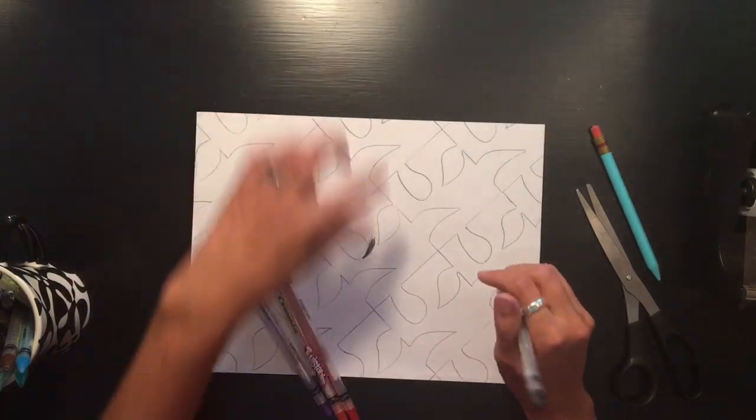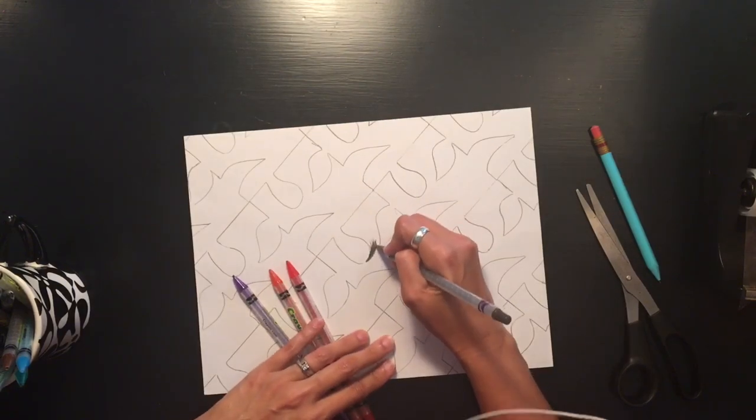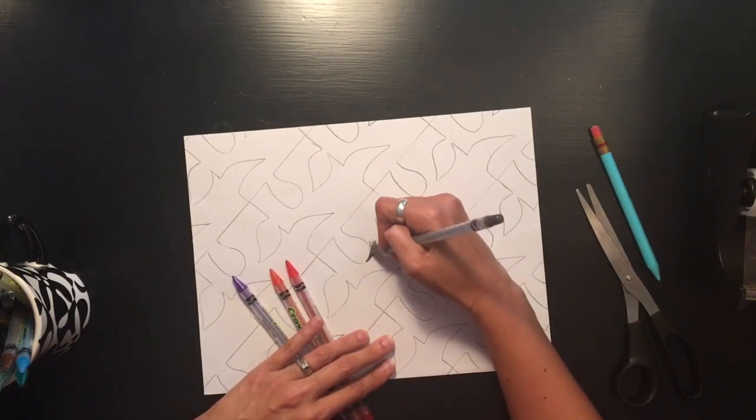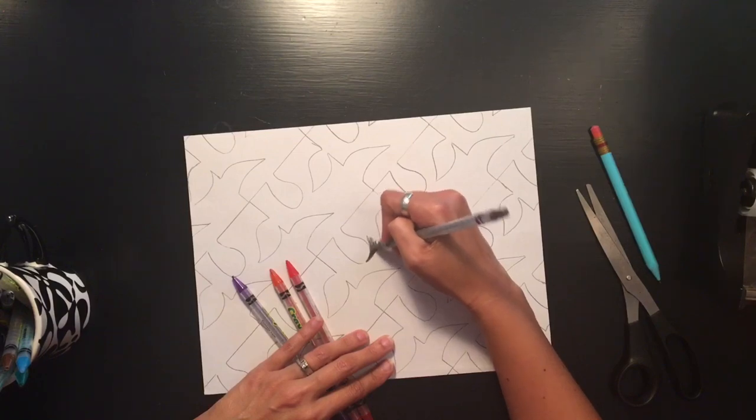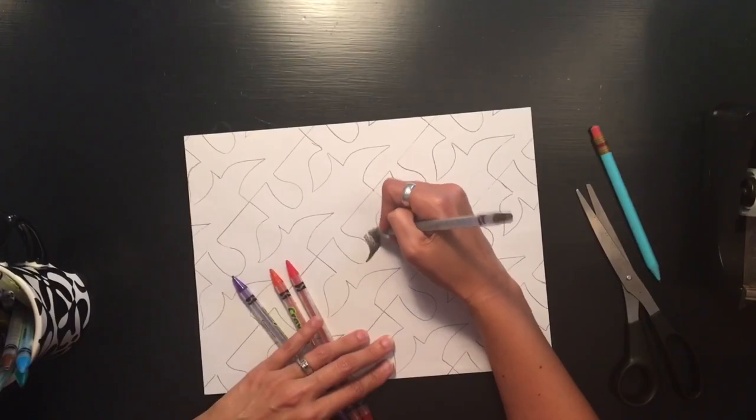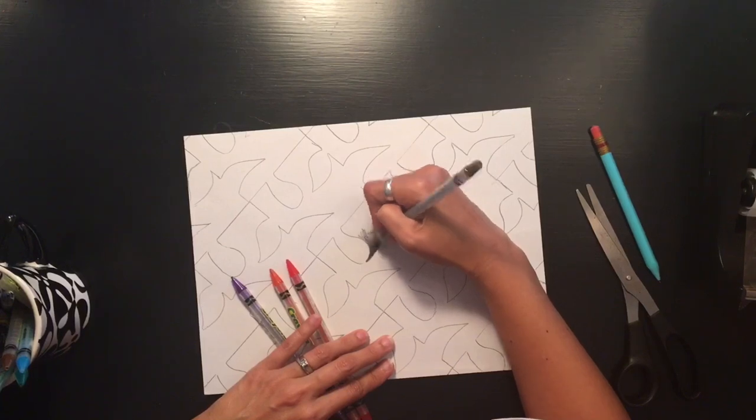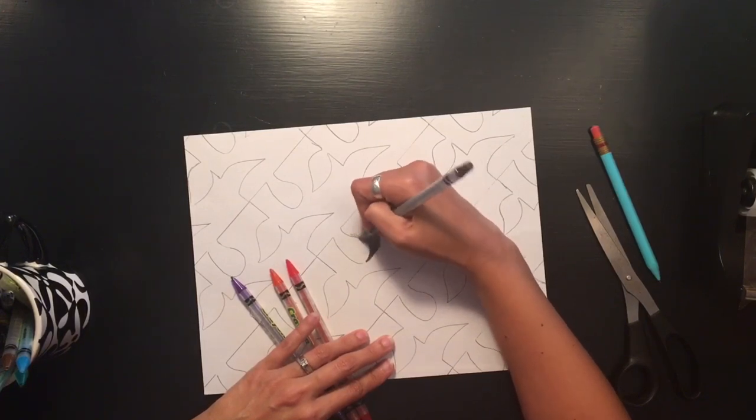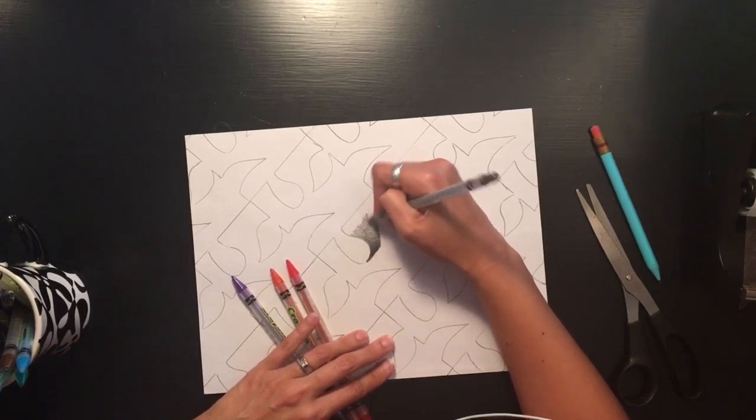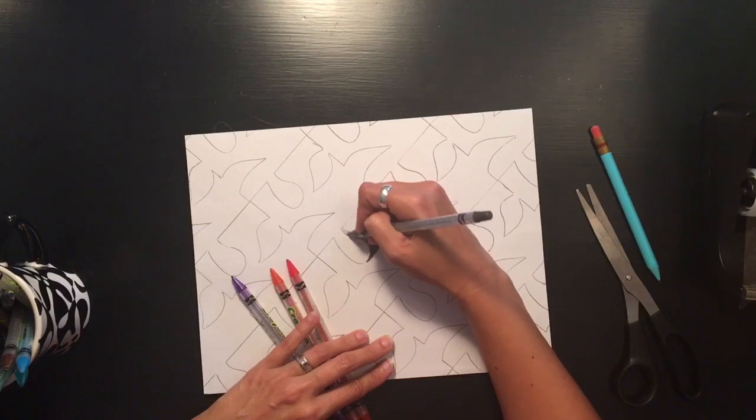So I'm starting here by applying a lot of pressure to create a dark value, and then as it comes further from that spot it will get lighter and lighter, to lightest.